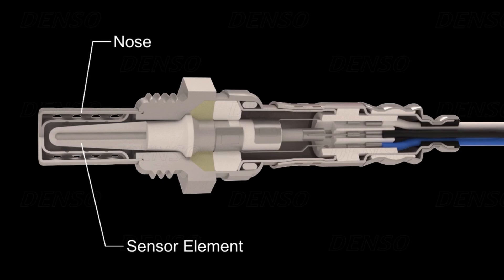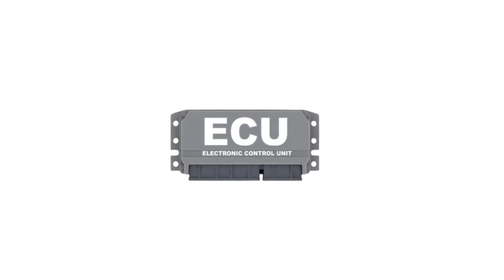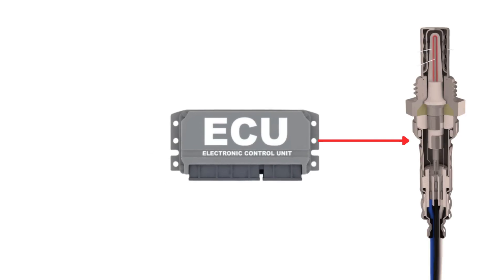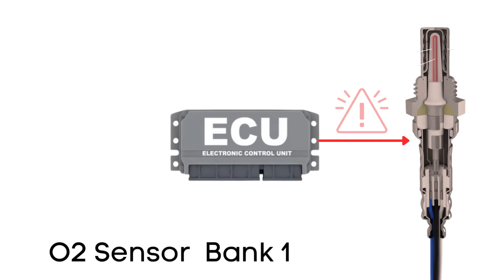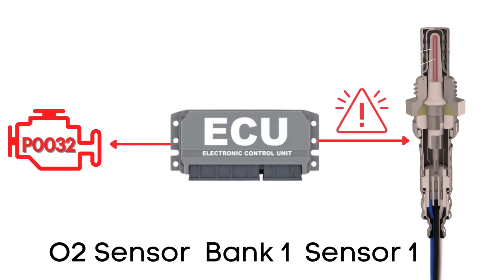That's where the heater circuit comes in. It's designed to warm up the sensor quickly so it starts working sooner. The ECU regularly checks the heater circuit in the oxygen sensor to ensure it's functioning correctly. If it finds that the voltage in the heater circuit for bank one, sensor one is higher than expected, it will trigger the P0032 code.